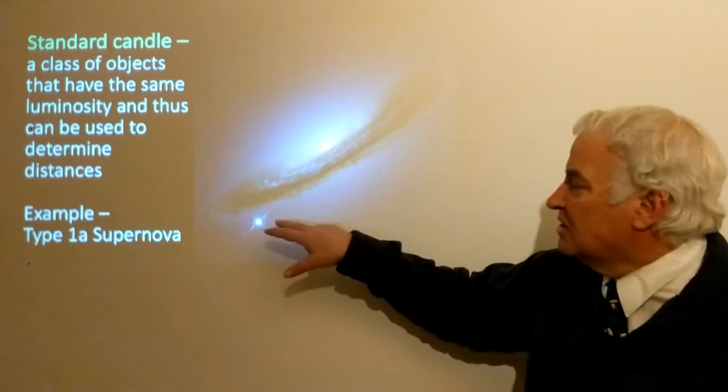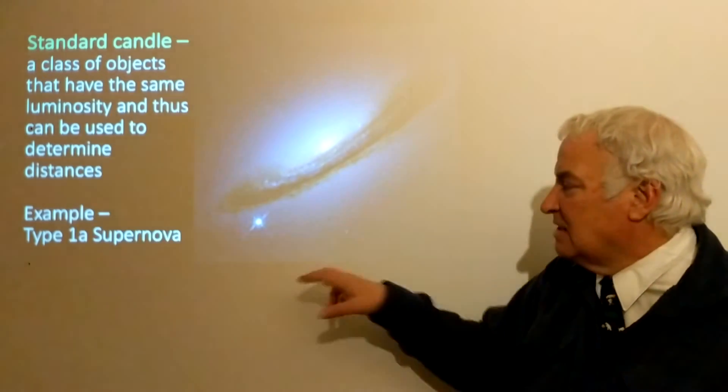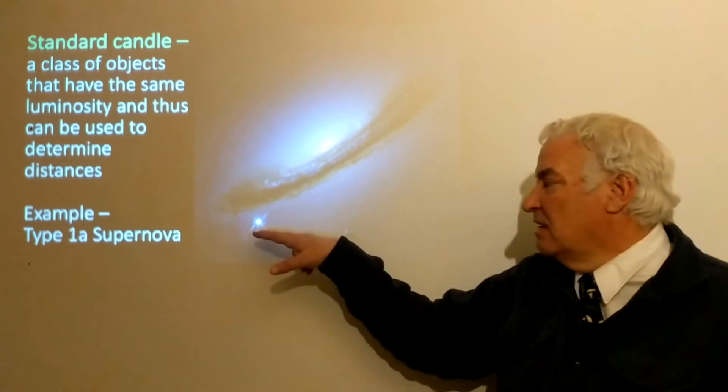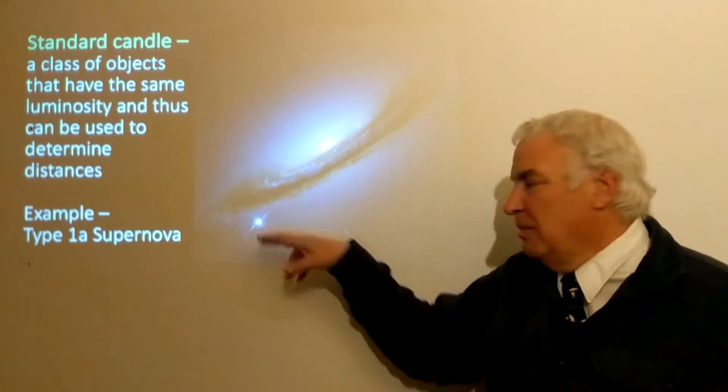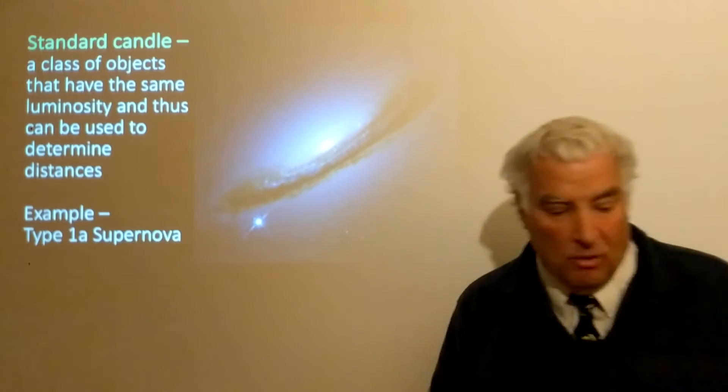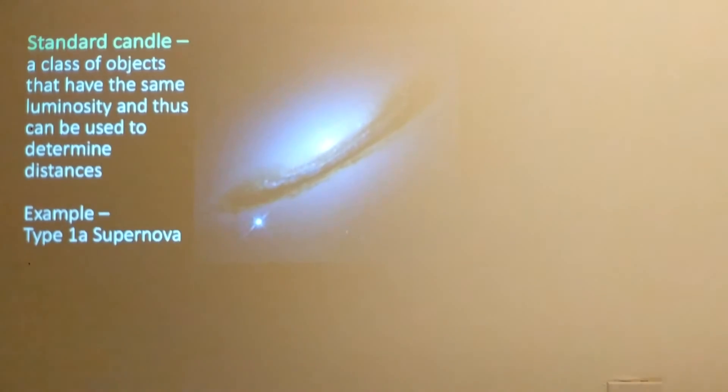So this is what we mean by a standard candle. If I see one that is a million times fainter than this one, well I know it's the square root of a million times farther away or a thousand times farther away.